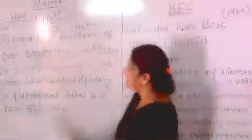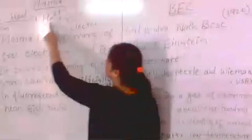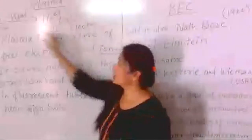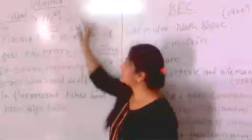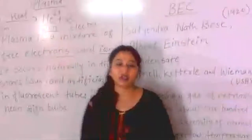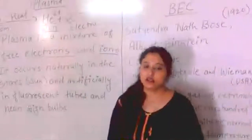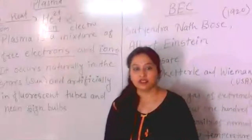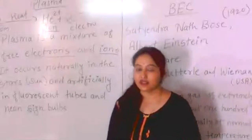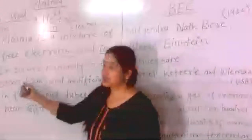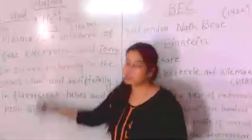What is left is called an ion. This mixture of electrons and ions is what we call the state of plasma. It is different from solid, liquid, and gas. It is a different type of state — we cannot see it with the naked eye in ordinary conditions.